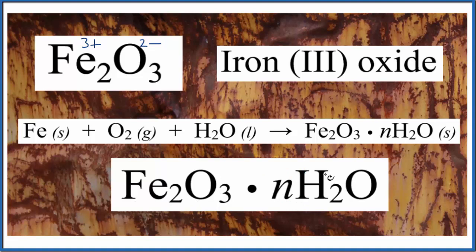We could write the formula for rust as Fe2O3 dot nH2O, hydrated iron three oxide.